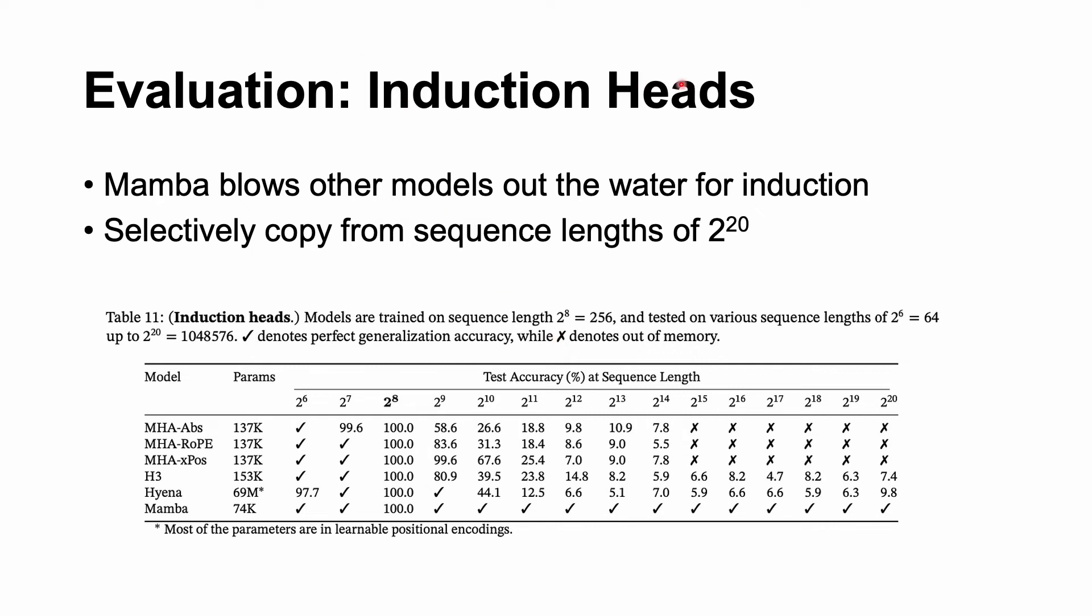The first one is induction heads. So basically what induction heads is testing is given a paragraph, how well can you recite that paragraph just based off of memory. So Mamba blows other models out of the water for induction. You can see that Mamba at the very end. So the check marks actually just denote perfect generalization accuracy. So you can see that Mamba is actually up to 2 to the power of 20, which is around a million. It blows it out of the water. It's crazy.